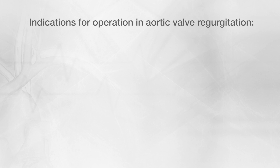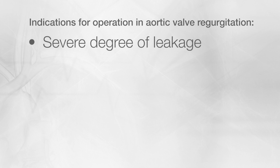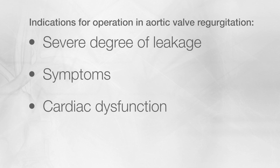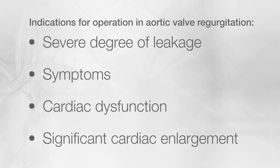Diagnosis, again, is predominantly suspected based on physical examination and is confirmed by transthoracic echocardiography. Just like aortic stenosis, we're able to quantify the severity of leakage, but sometimes transesophageal echocardiography or a cardiac MRI is required to better understand the degree of leakage. Indications for an operation in aortic valve regurgitation include a severe degree of leakage in combination with symptoms, cardiac dysfunction, or significant cardiac enlargement.